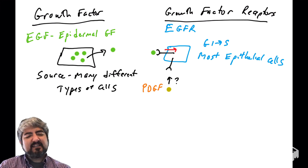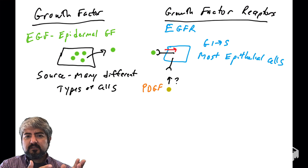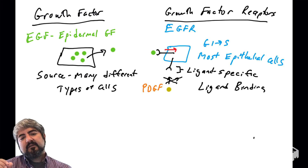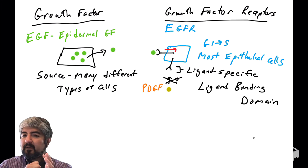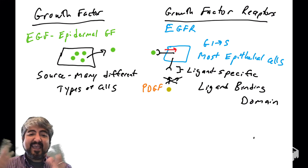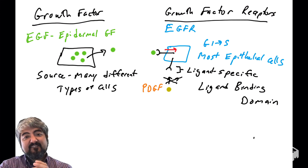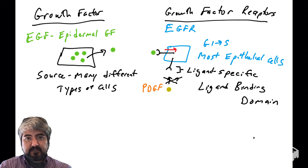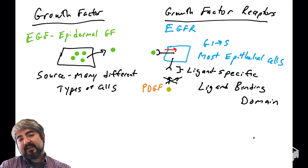Would PDGF bind the EGF receptor? No, they are not interchangeable. Receptors have a three-dimensional structure that binds very specific ligands — receptors are ligand-specific. They will only bind the growth factors that fit into their ligand-binding domain. PDGF binds the PDGF receptor; EGF binds the EGF receptor; they do not bind each other. Growth factors stick with their own corresponding growth factor receptors.